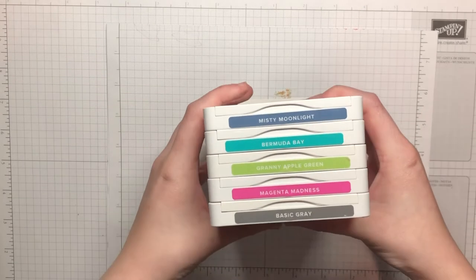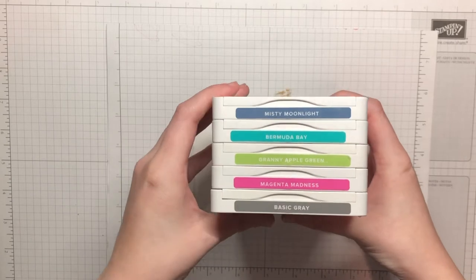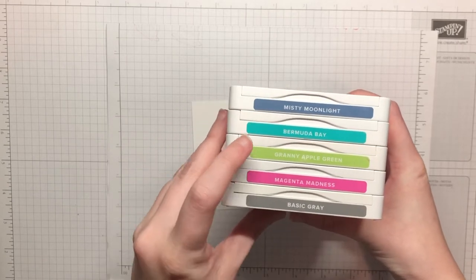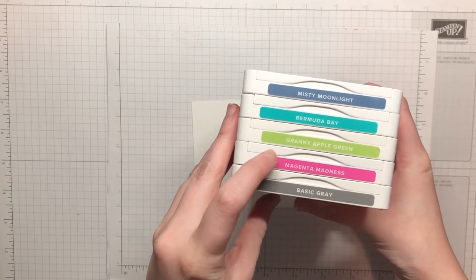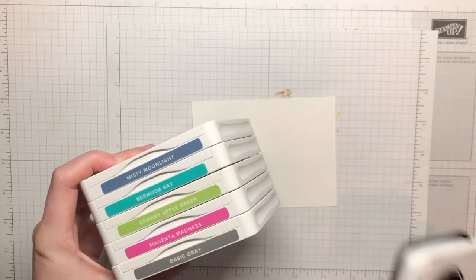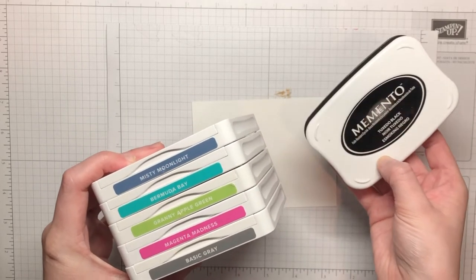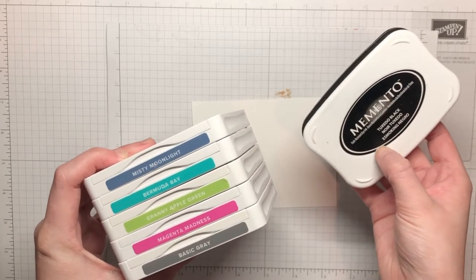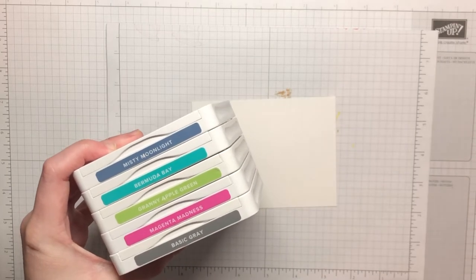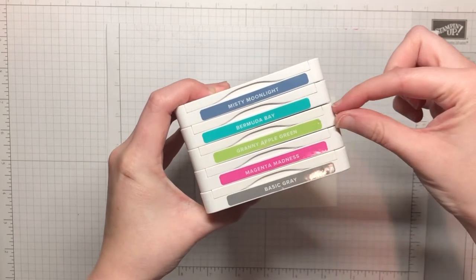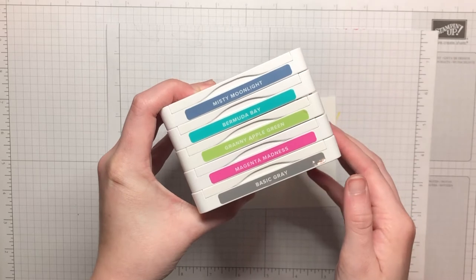Next up here I'm going to show you all the colors that we'll be using to sponge. We've got Misty Moonlight, Bermuda Bay, Granny Apple Green, Magenta Madness, and Basic Gray. And then I'll also be using Tuxedo Memento Black ink for some of the stamping. So I'm gonna go ahead and start with these three middle colors and I'll show you how we achieve this technique.